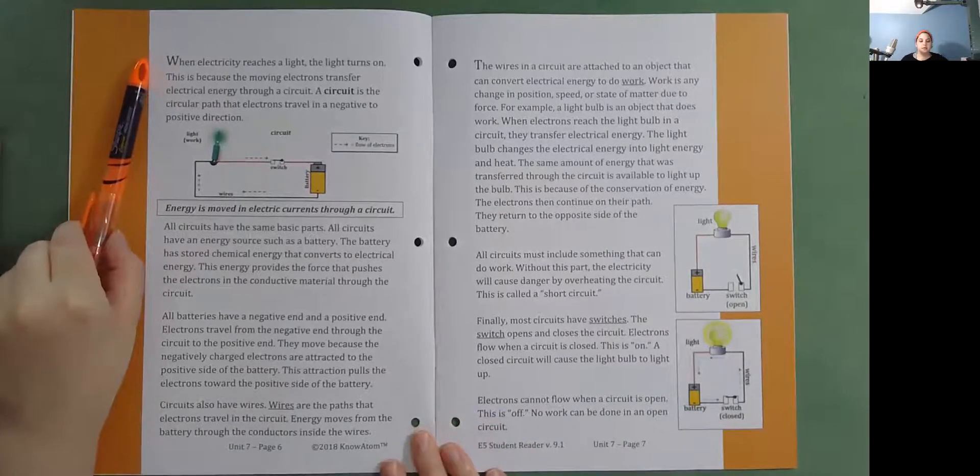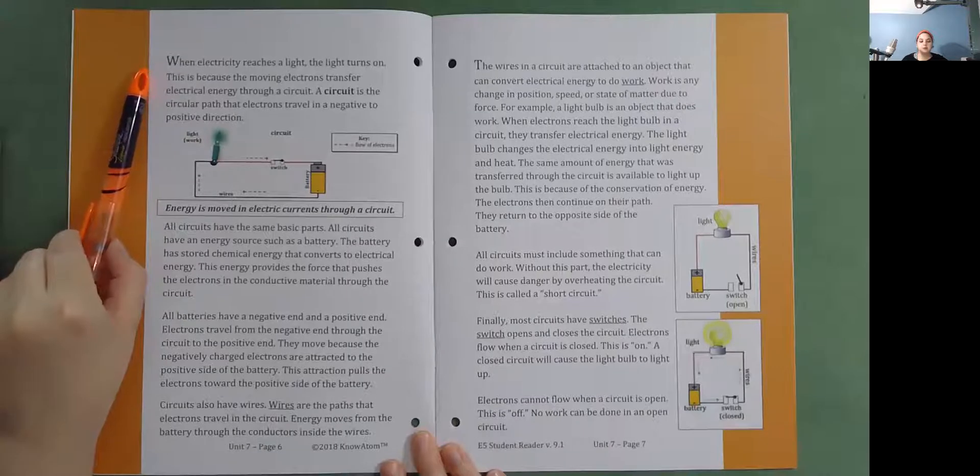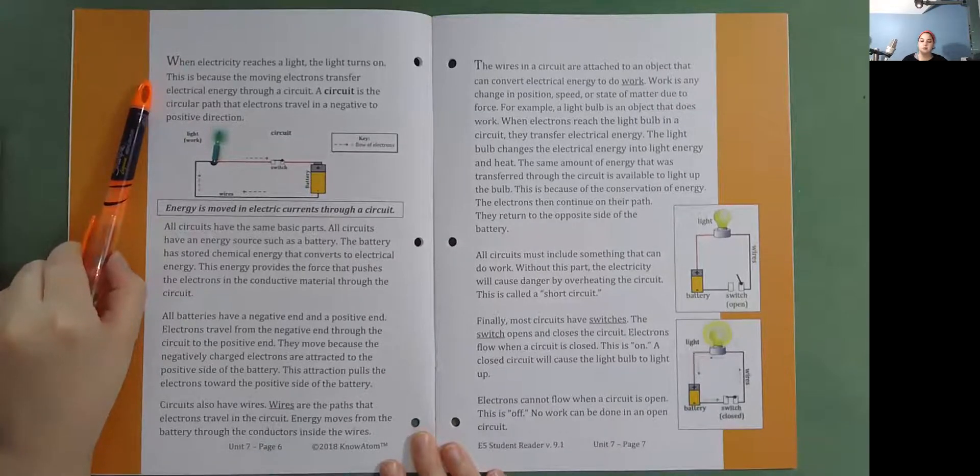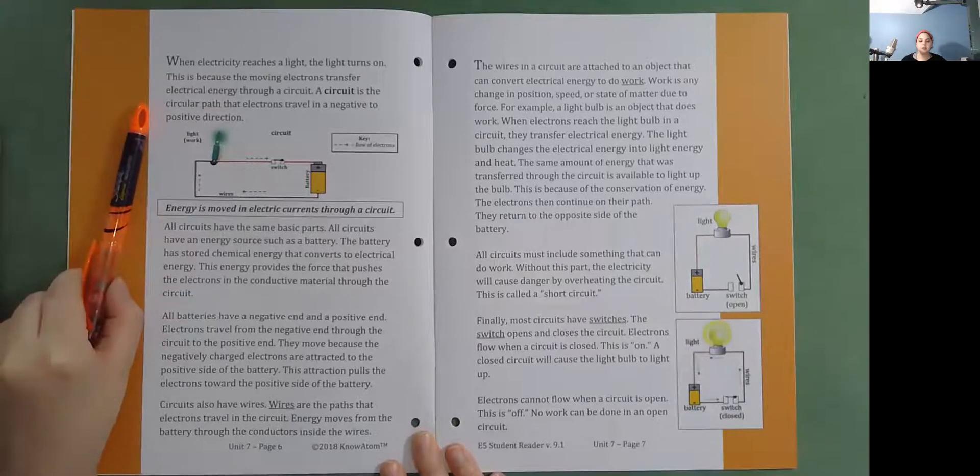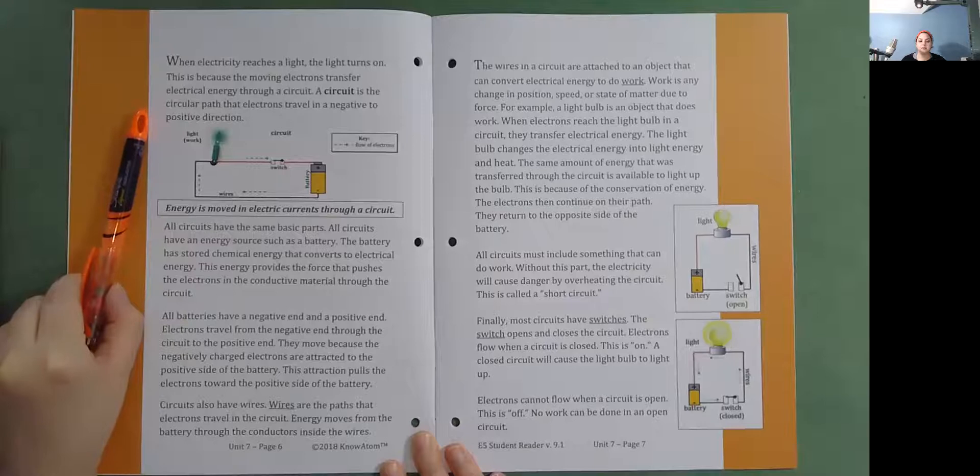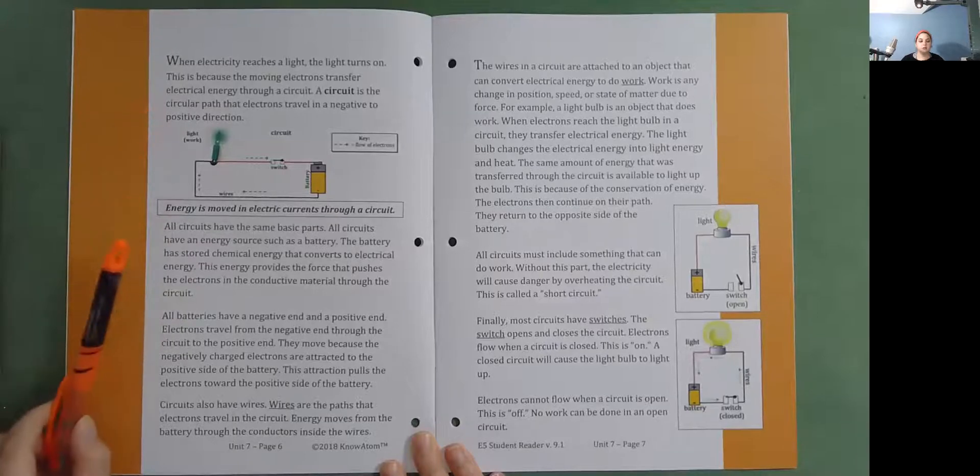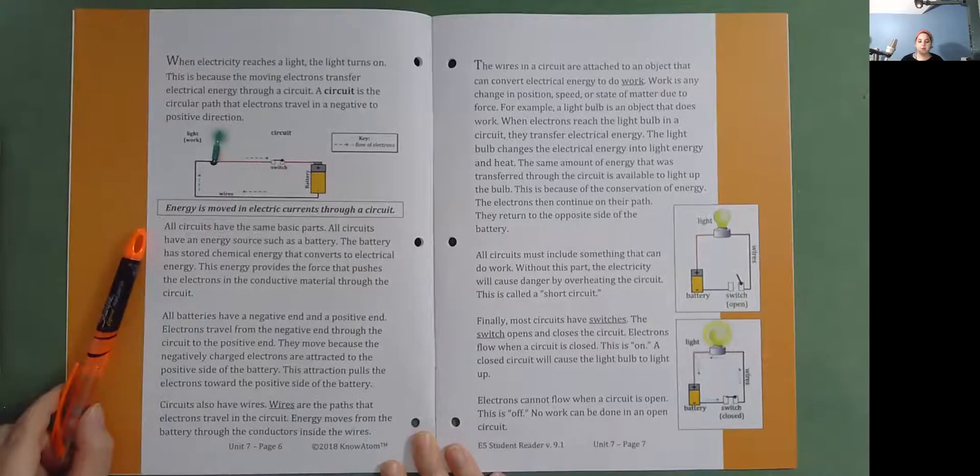When electricity reaches a light, the light turns on. This is because the moving electrons transfer electrical energy through a circuit. A circuit is the circular path that electrons travel in a negative to positive direction.